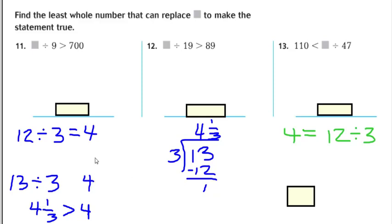So let's take a look at 11 and apply that same idea. So the first step that you would do is you would apply inverse operation. So we would multiply this number and this number which would give us 9 times 700 is 6,300.